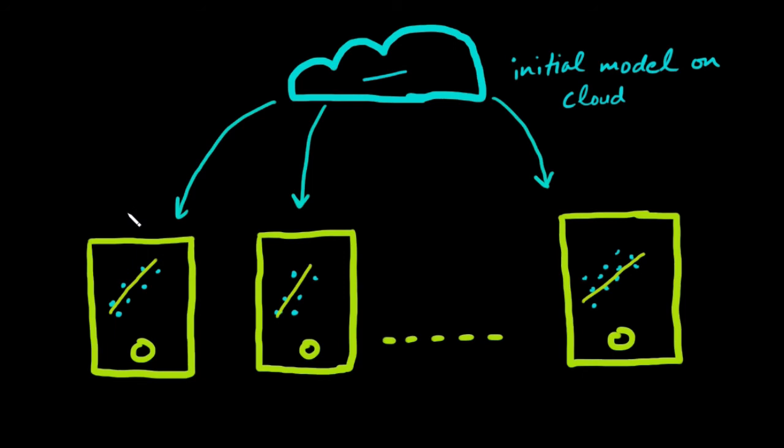And then only this update to the model is sent back to the cloud, of course using encrypted communication to protect it from third party interference or something like that, where it is immediately averaged with other user updates to improve the shared model. And this keeps on iterating itself.